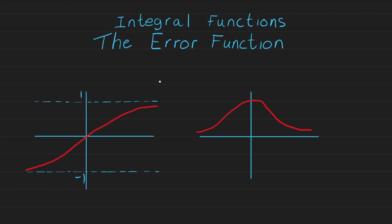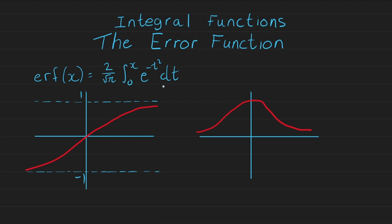So how is the error function defined? We write it as erf of x, and what it's equal to is 2 over the square root of π times the integral from 0 to x of e to the minus t squared dt. This is how the error function is written and we can do some analysis on it.